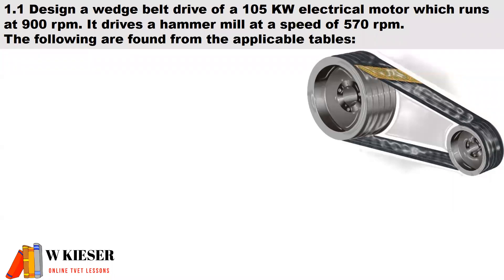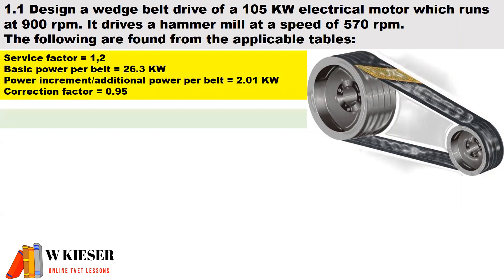In the first question we have a calculation: design a wedge belt drive of a 105 kilowatt electrical motor which runs at 900 revs per minute. It drives a hammer mill at a speed of 570 revs per minute. From the applicable tables provided: the service factor is 1.2, the basic power per belt is 26.3 kilowatts, the additional power per belt is 2 kilowatts, and the correction factor is 0.95.